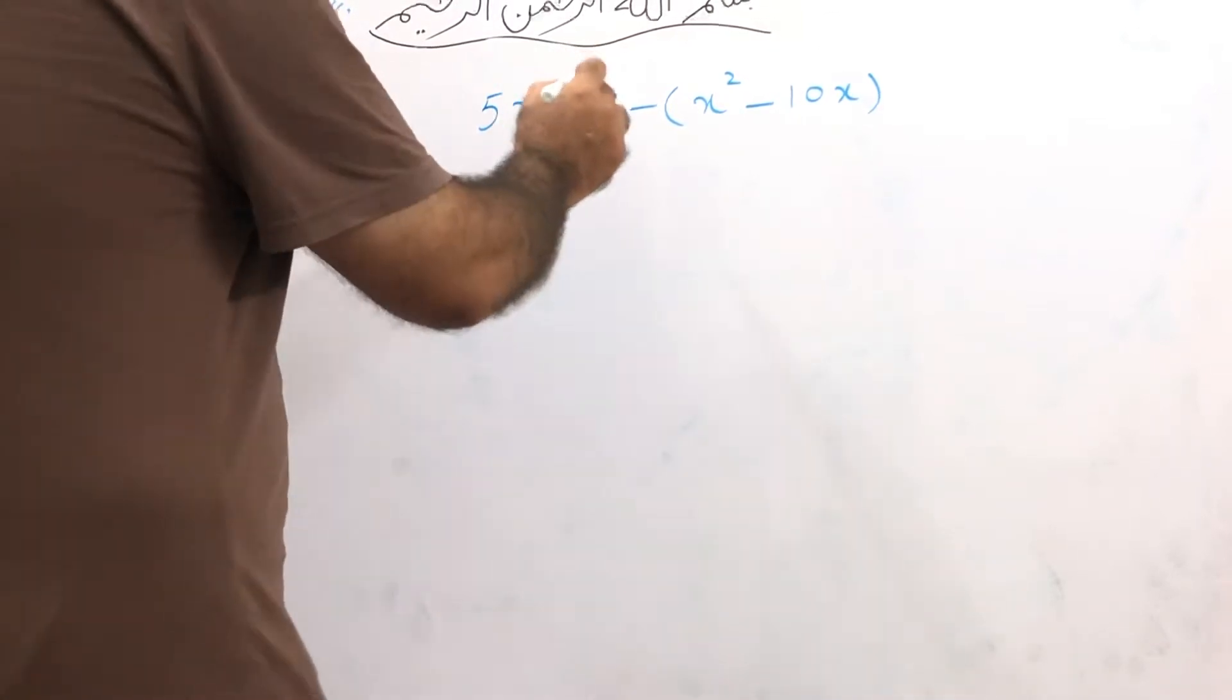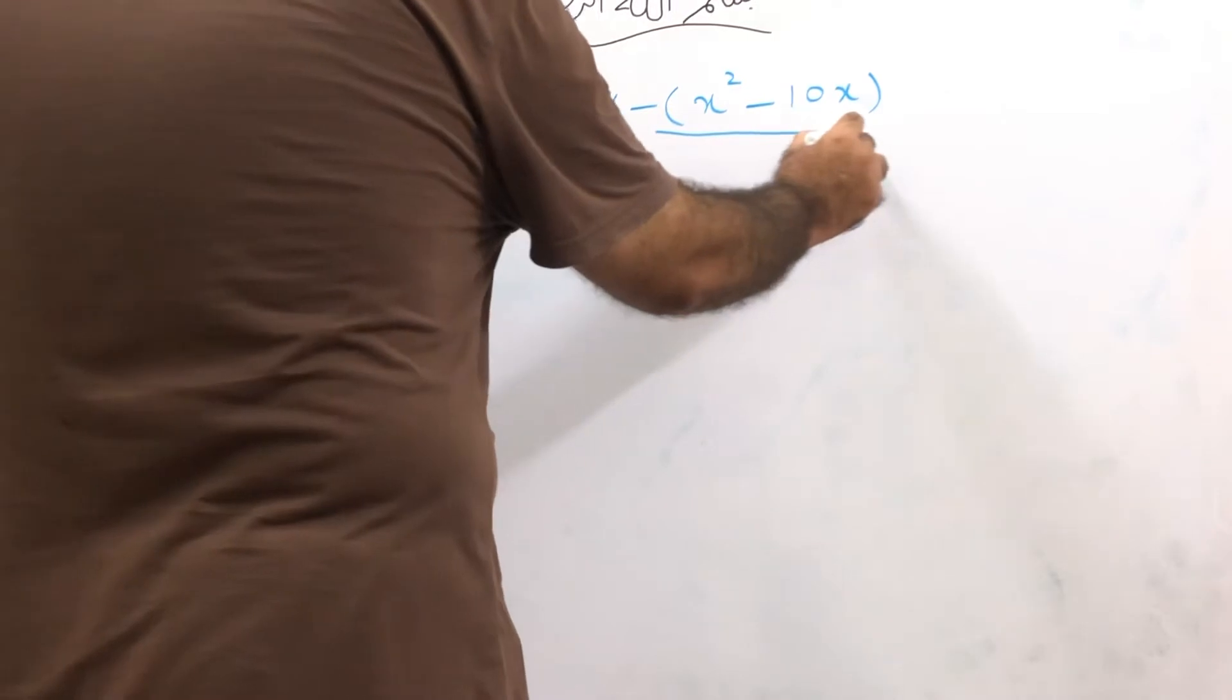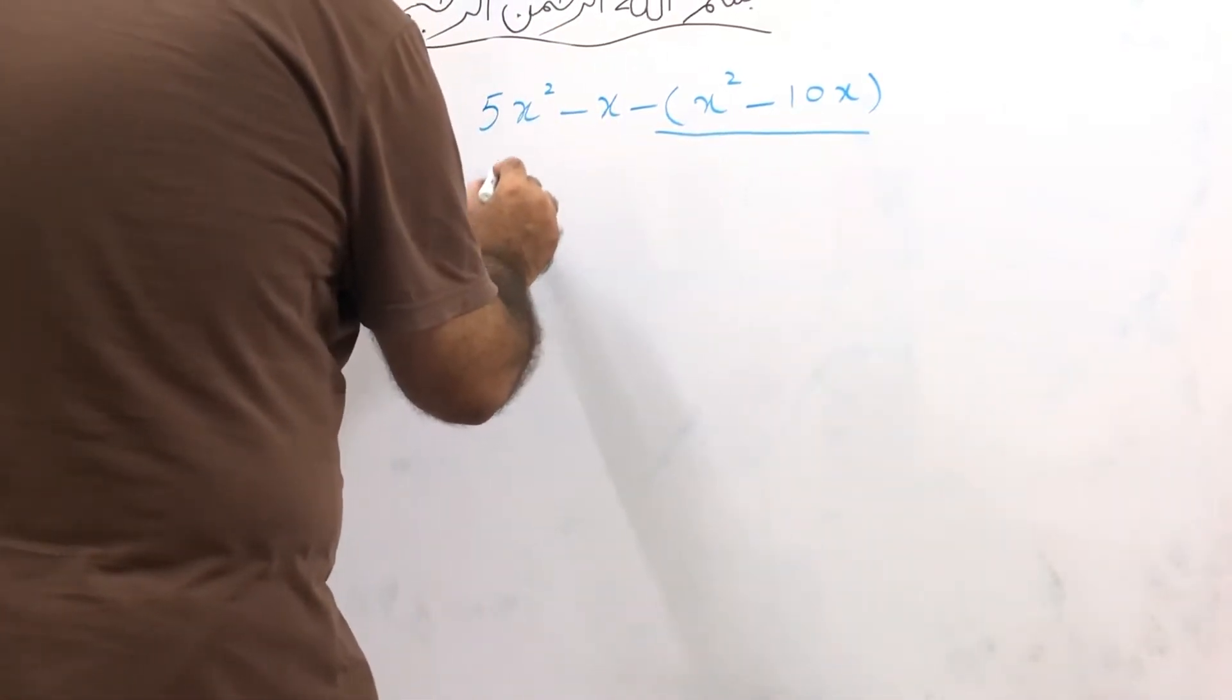First of all, we will be opening this bracket. We will do like this: 5x² minus x.